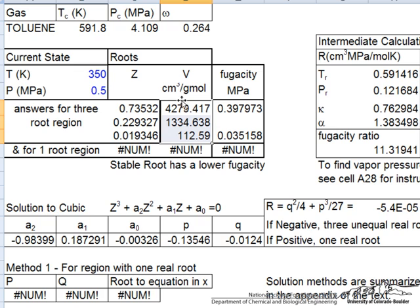The large volume is the vapor phase. The small volume is the liquid phase. And the in-between point is the physically unmeaningful solution to the cubic equation. However, only one of these values is physically correct, and that's the value with the lowest fugacity.